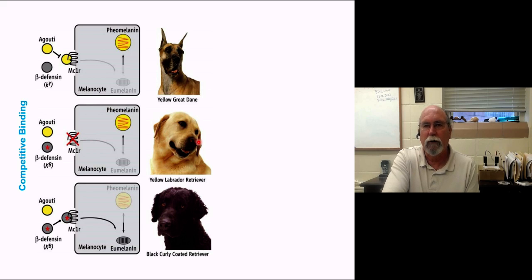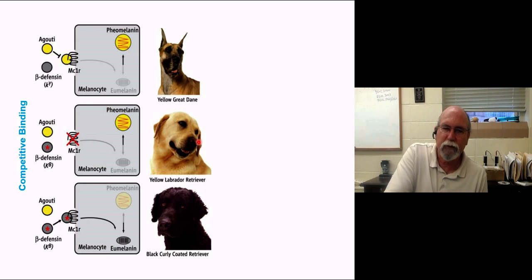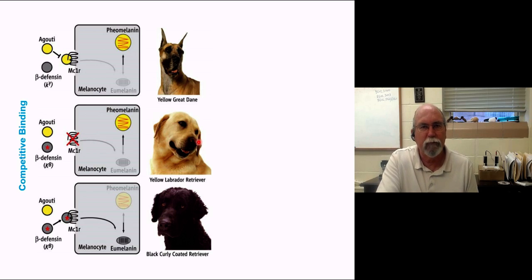Another way to get yellow, which is what we see in yellow labs, is if there's a mutation in this MC1R system where you can't grab the agouti antigen, and you can't have this ligand come in and ligate to cause movement across the membrane and activation of this pathway. By default, it defaults to yellow.